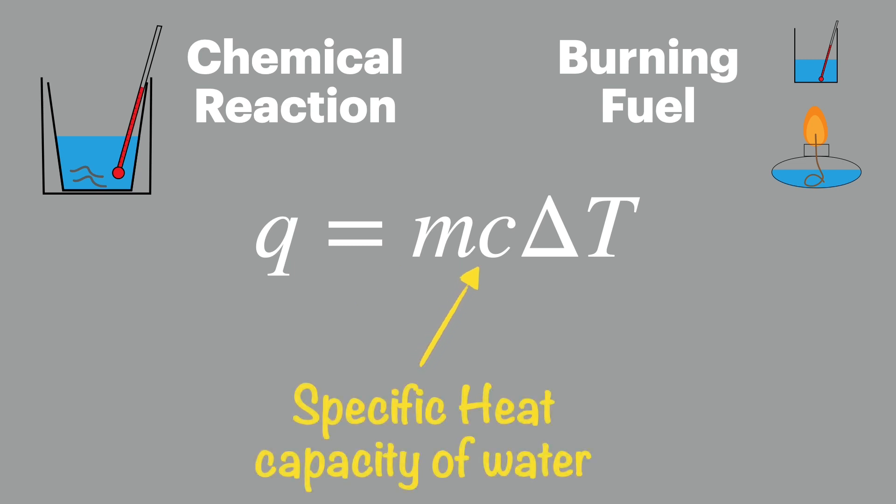C is for the specific heat capacity of the substance being heated. In both cases we use the value for water, which is 4.18 joules per kelvin per mole.